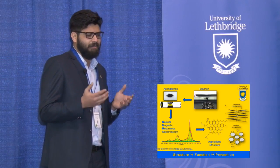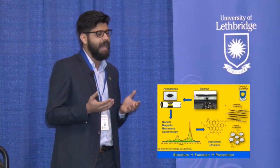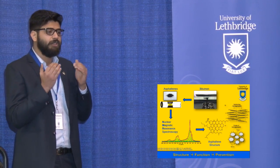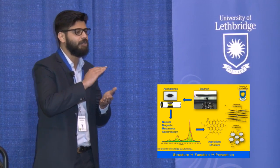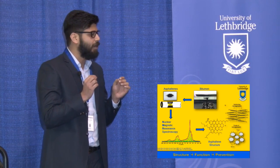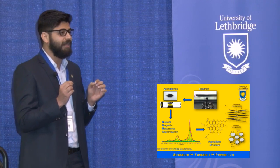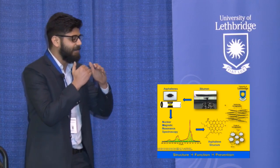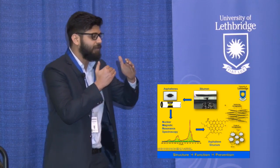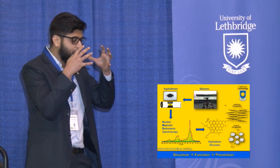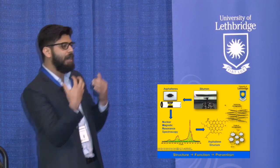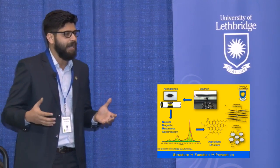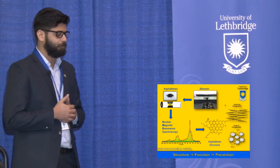What makes bitumen so thick and viscous is a class of solids suspended within it called asphaltenes. Asphaltenes are often referred to as the cholesterol of petroleum because, rather than staying dissolved in the bitumen, they form aggregates and fall out of the oil, creating large blockages in pipelines and even underground reservoirs.